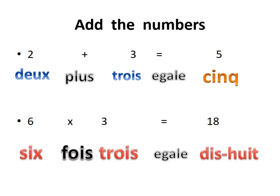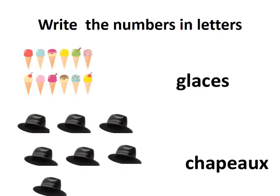As I gave you the numbers earlier, you have to learn to pronounce them, and also revise A to Z everyday. Now write the numbers in letters — count the ice creams. Ice cream is called 'glace', spelled G-L-A-C-E. Here there are 12 ice creams, so 12 is written as 'douze' in French.